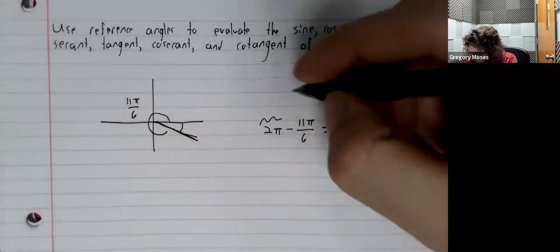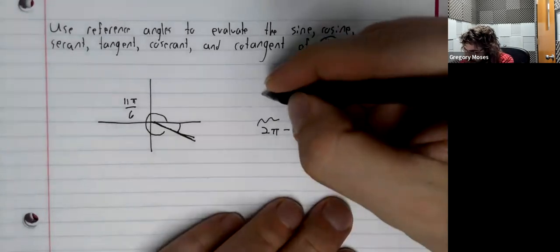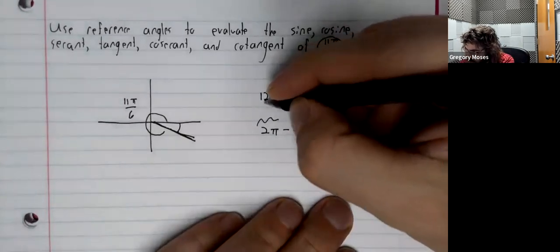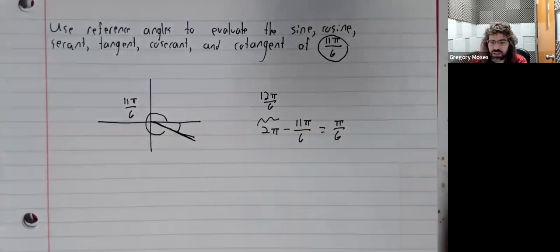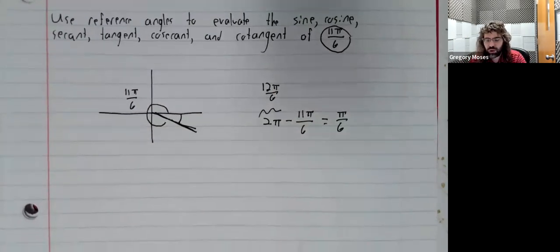We got the common denominator. This is 12 pi over 6. And therefore,